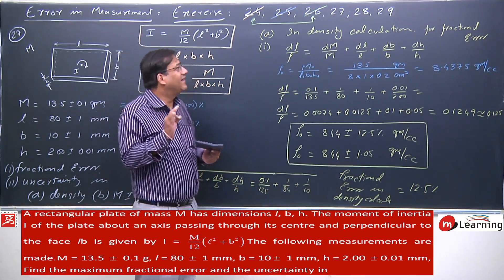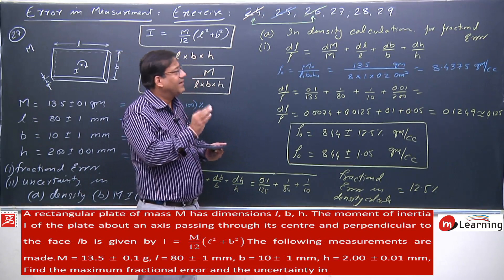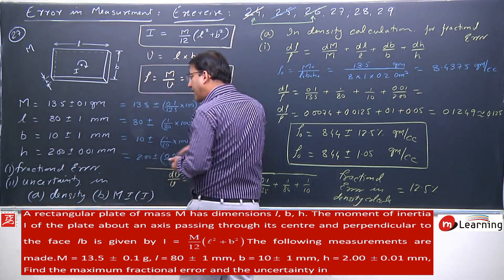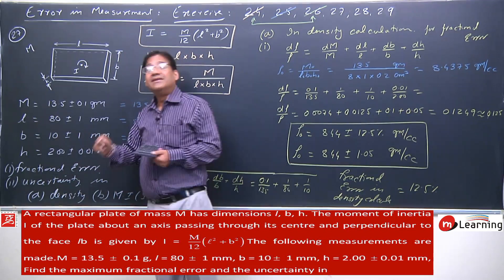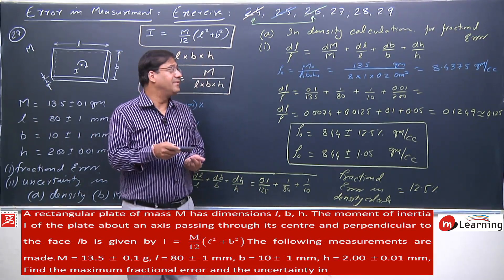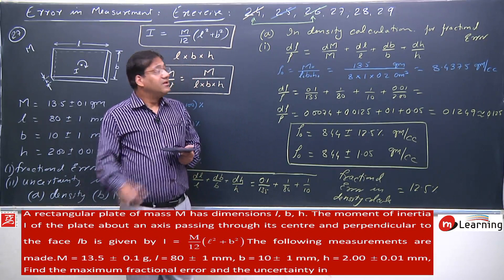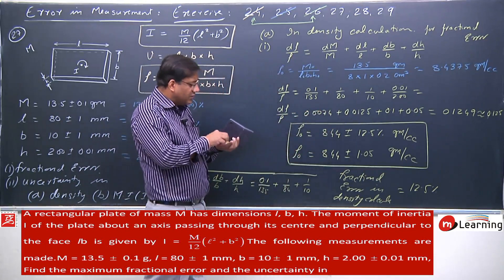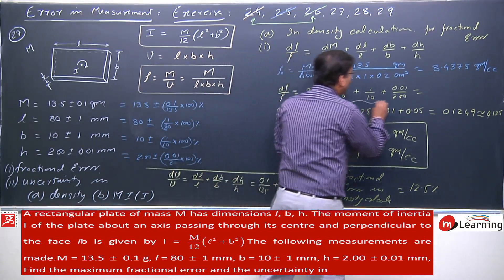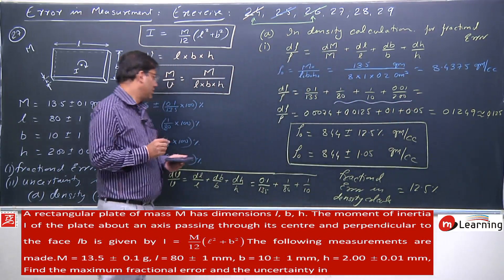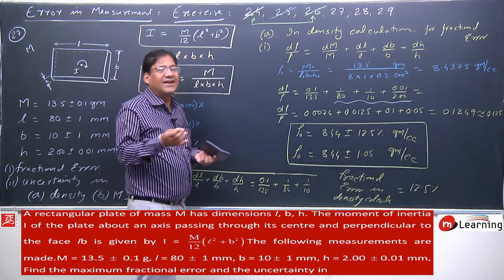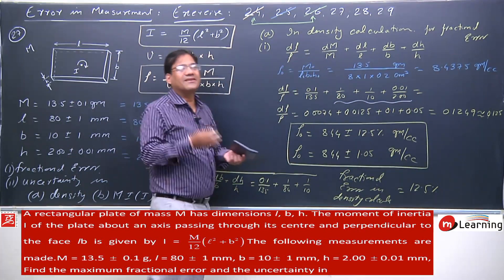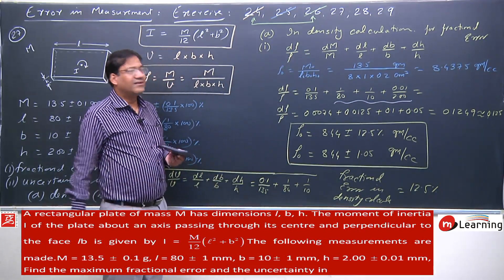Now for the uncertainty in density: for volume, we only add the three relative errors (L, B, H). For density, we also include the mass term — all four terms are added. V₀ = L₀ × B₀ × H₀.